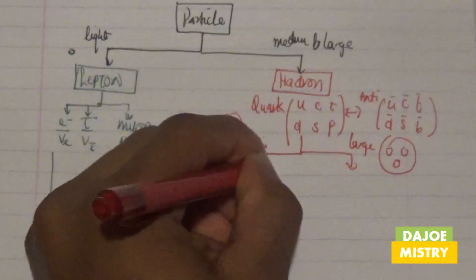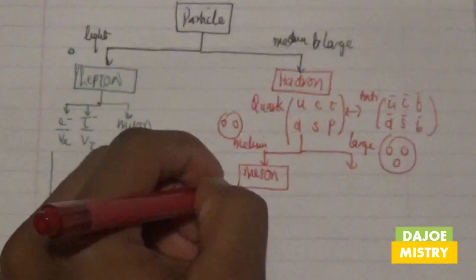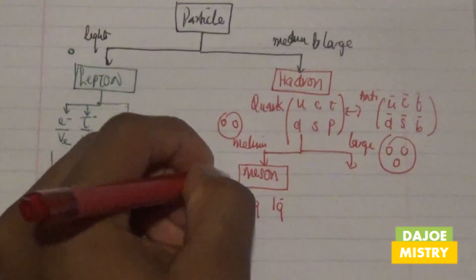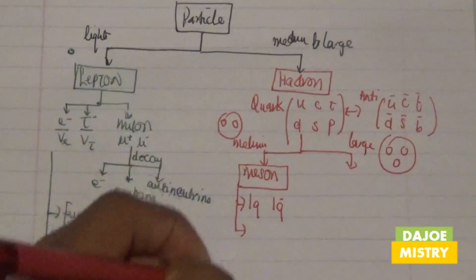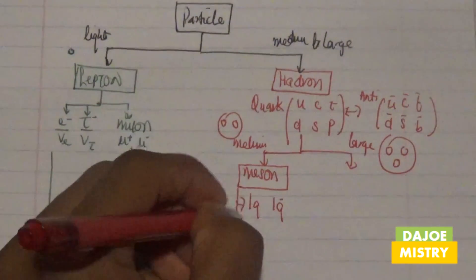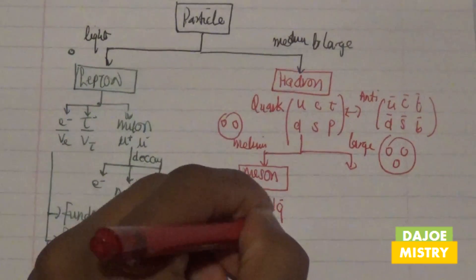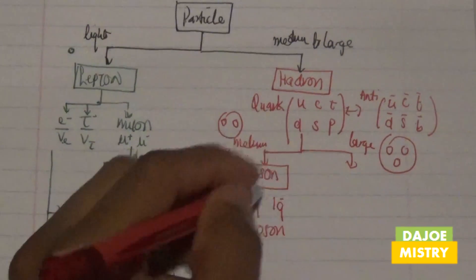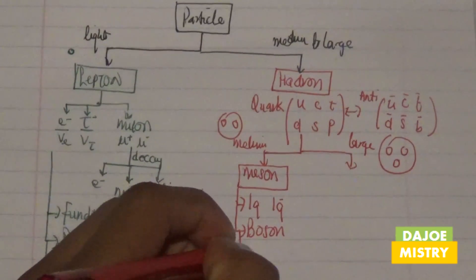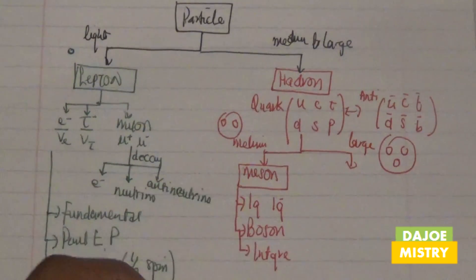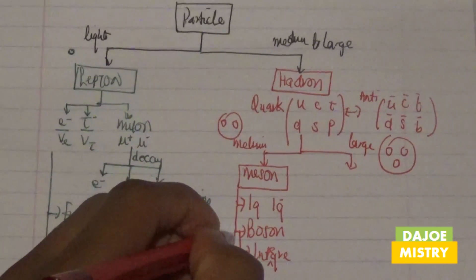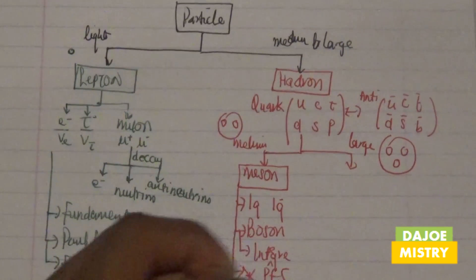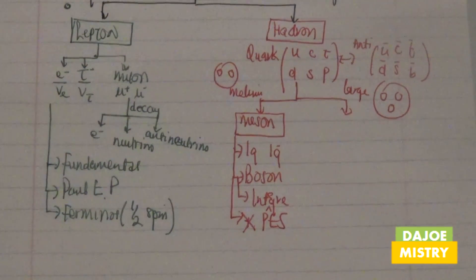The medium particles are known as mesons. Mesons consist of one quark and one antiquark. Once you have these two particles interacting, all mesons are known to be bosons. Bosons are the opposite of fermions — a fermion has a half-integer spin state, however bosons have an integer spin. With an integer spin, bosons don't obey the Pauli exclusion principle.